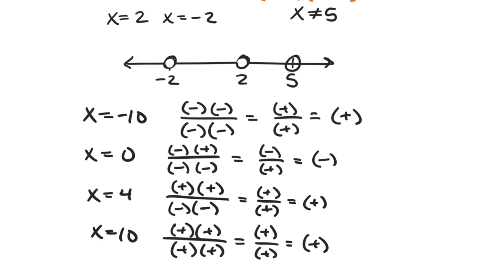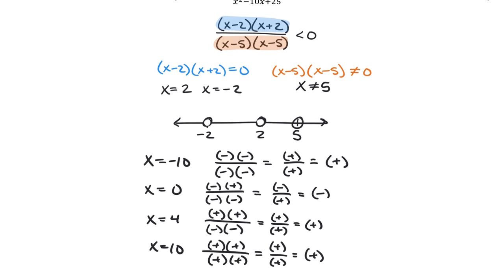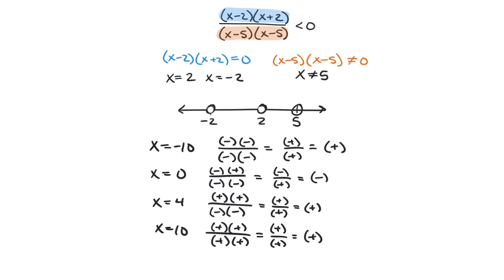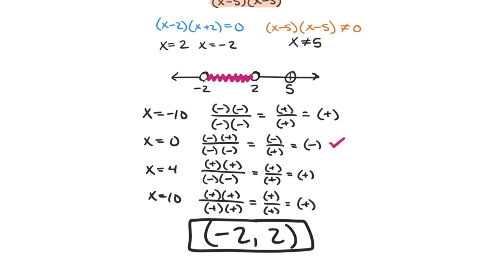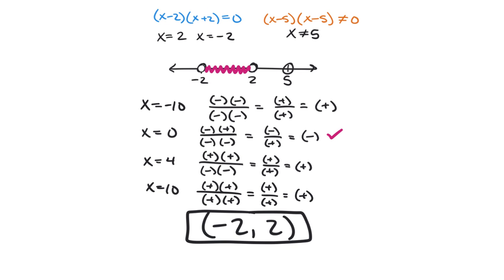Going back to the actual inequality — we want where it's less than zero. Only the second interval (between -2 and 2) is negative. Since the inequality is strictly less than (not equal to), we do not use brackets even at the zeros. The answer is (-2, 2).